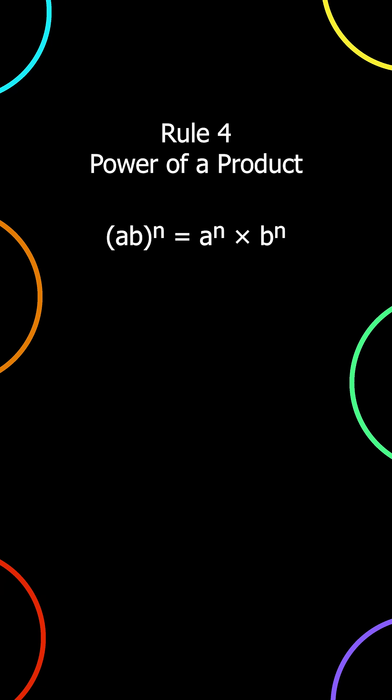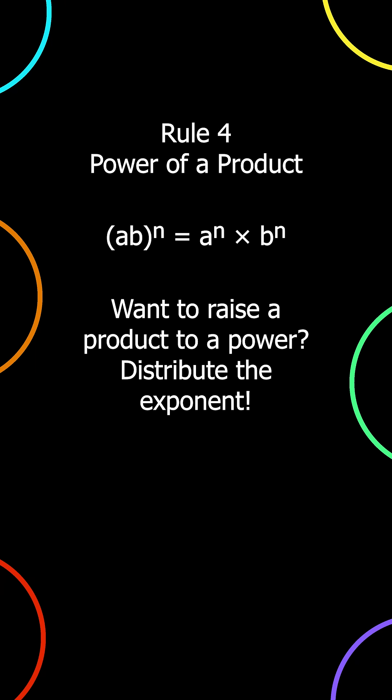Rule 4: Power of a product. a times b, all raised to the power of n, is equal to a to the power of n times b to the power of n. Want to raise a product to a power? Distribute the exponent. Example: 3 times x, all raised to the power of 2, is equal to 3 to the power of 2 times x to the power of 2.